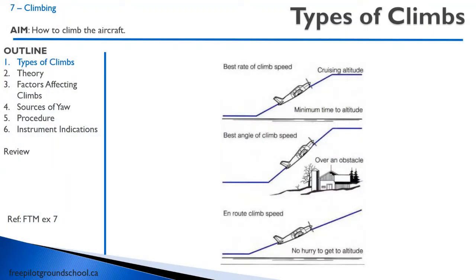We can have three different types of climb. The first one, we can be climbing at our best rate of climb speed. This is the type of climb that we want to use when we want to have the minimum time to altitude — the greatest climb in the least amount of time. We can also have a best angle of climb, which is a slower speed — it's the speed that has the best climb for the minimum distance, so this will be if we need to clear an obstacle. And lastly, we have an en route climb speed, which is just a faster climb than best rate of climb for when there's no hurry to get to altitude and we just want to get somewhere quickly. Keep in mind these diagrams here are just vastly exaggerated; there's not too many training airplanes that will climb at these kind of angles.